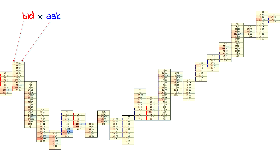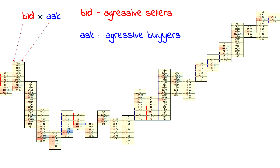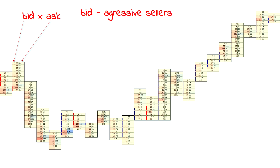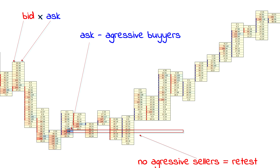Let's first understand the concept of delta. The delta indicator reflects the difference between the volume of demand — aggressive purchases — and the volume of supply — aggressive sales. Within the framework of exchange trading, aggressive trades are those executed at the market price, initiated by participants who are ready to conclude a deal immediately. A positive delta indicates the dominance of buyers, and a negative delta indicates the dominance of sellers.